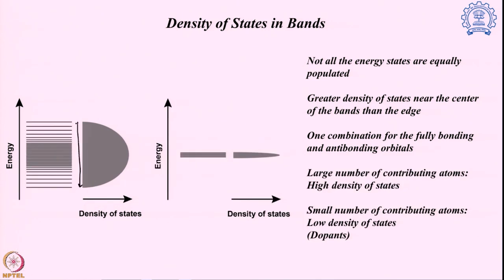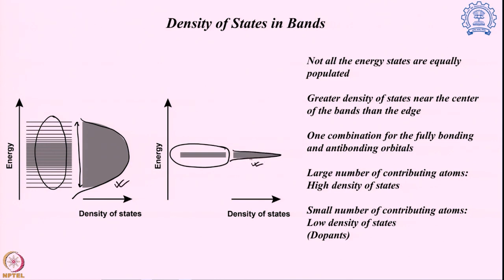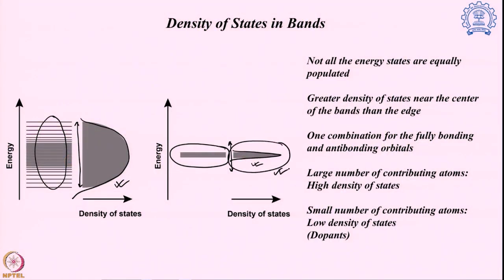How much the density of states spreads with respect to the energy scale depends on how many atomic orbitals are combining. With a huge number of atomic orbitals, there is a huge spread. However, if only a small amount of atomic orbitals are contributing, the spread will be pretty low — much more narrow with the same shape but low energy spread. This is very crucial when we add an impurity in a small amount into a semiconductor or metal — that dopant is going to show this kind of narrow band structure because it remains in a very small amount in the original sample.